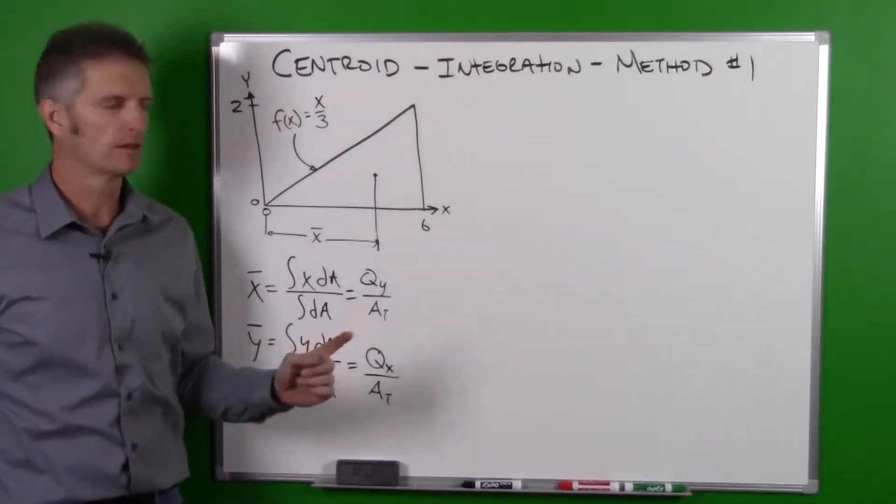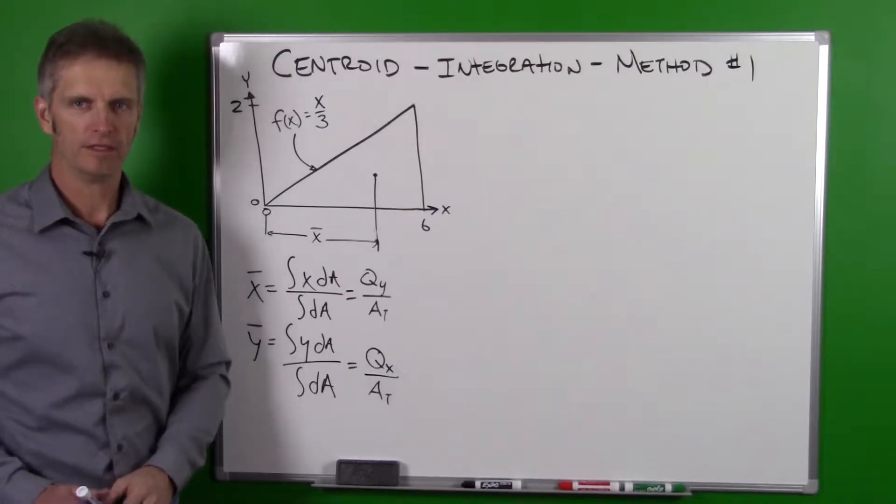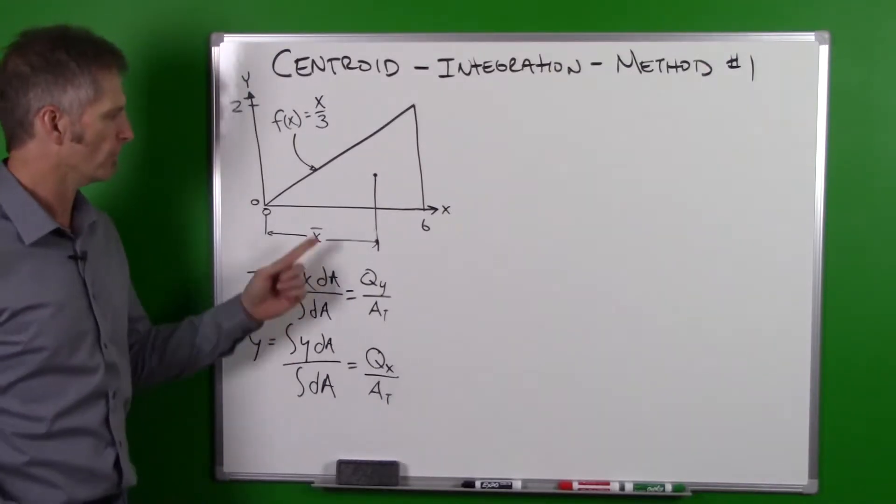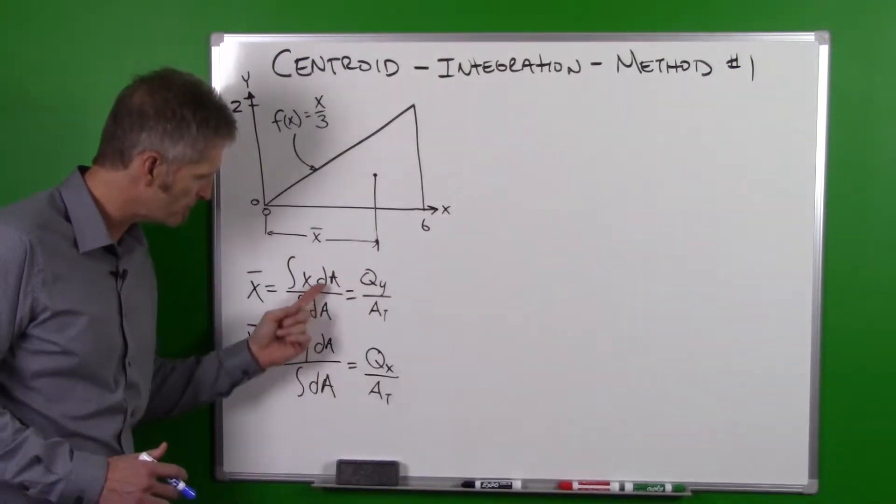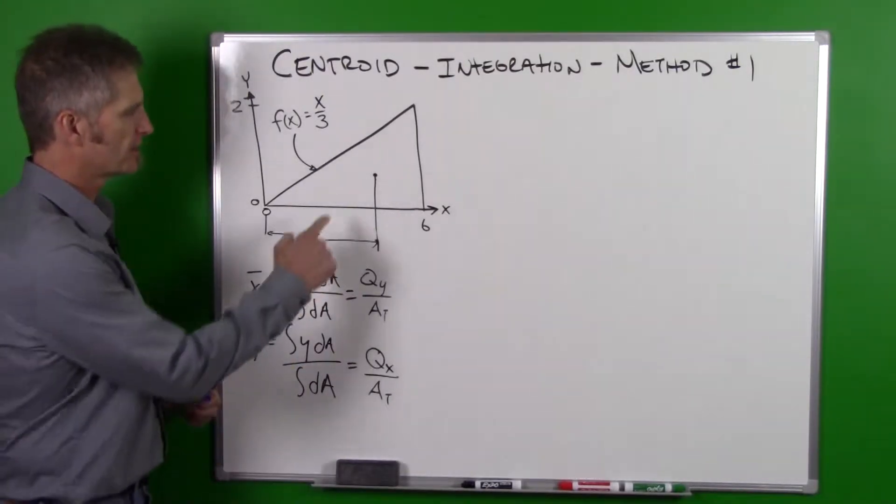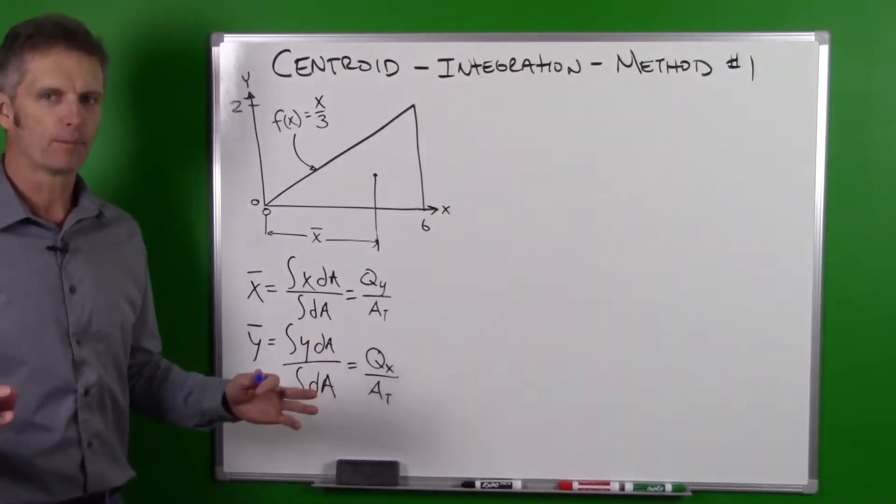But we're going to use this integration method to solve for the centroid here, x bar. So first thing we need to do is come up with our dA. This dA is in both our numerator and our denominator.